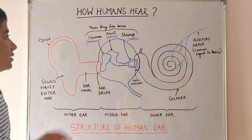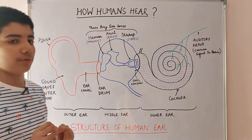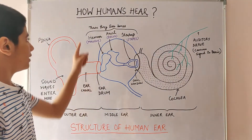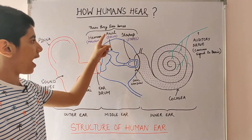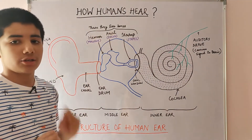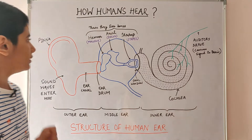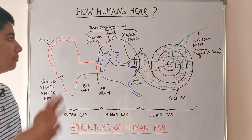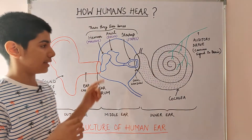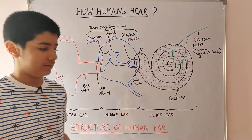The middle ear comprises three tiny ear bones. These are the hammer, anvil, and stirrup. These are also known as the malleus, incus, and stapes.